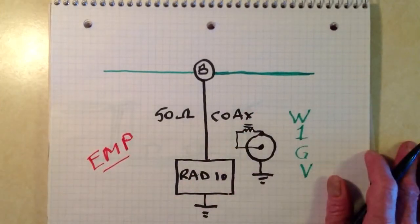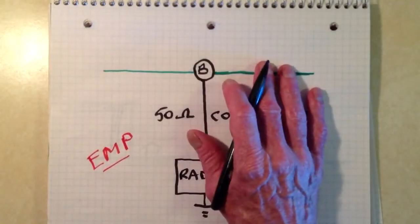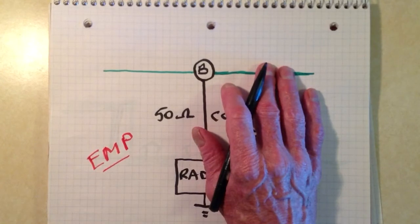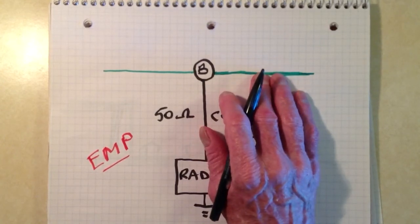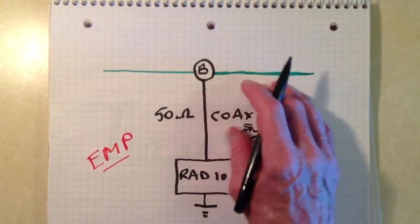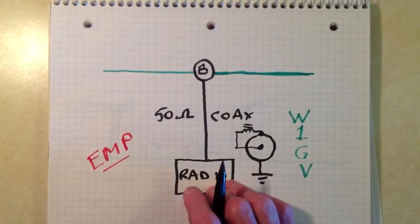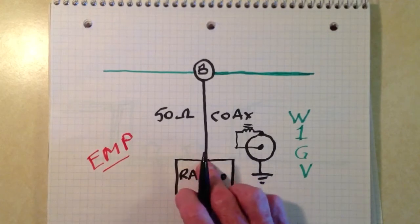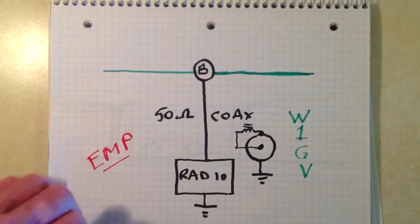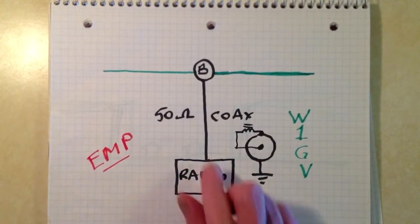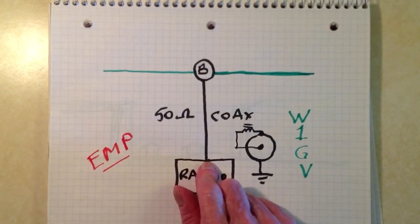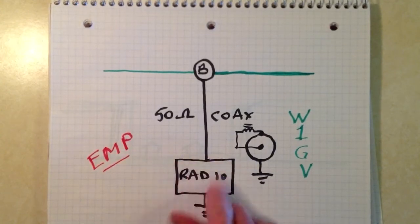Now, all that said, if there's a thunderstorm in progress near your location, and in particular if it's occurring right where you are, you're kind of foolish to operate the radio at all. And in fact, your best bet is to disconnect this coaxial cable and ground the center conductor directly. Keep it away from your radio and ground it.